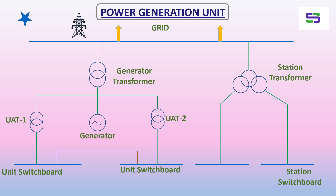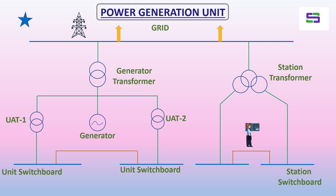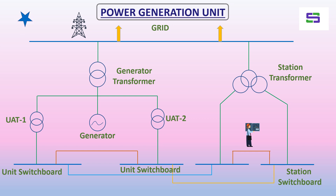The station switchboards feed supply to the common auxiliary systems in the power plant. There is a bus coupler between these two switchboards, and there will also be bus changeover — automatic bus transfer — so the FBT or ABT panel will be there. Between the unit switchboard and station switchboards there is coupling, and normally those breakers are kept open.